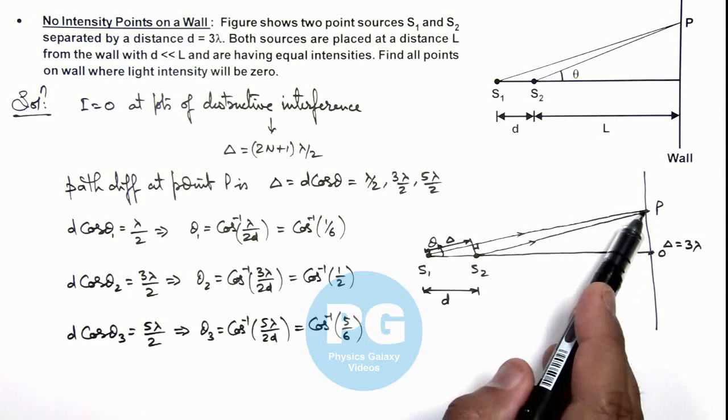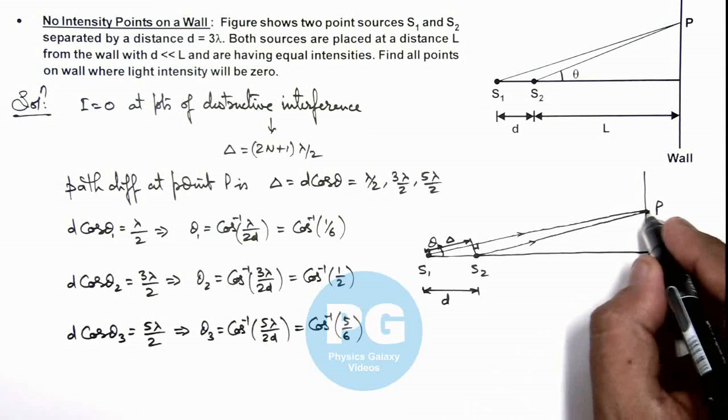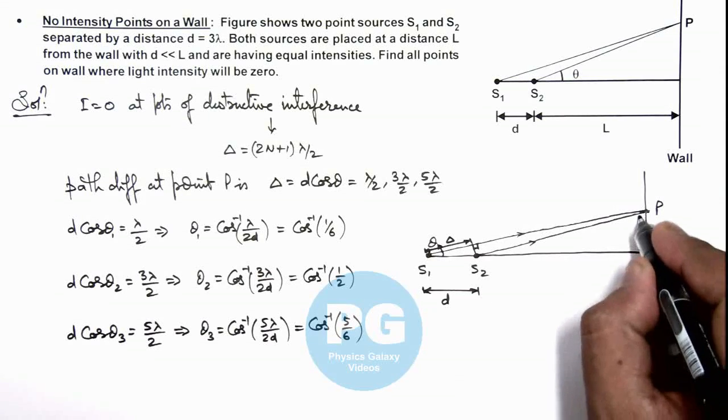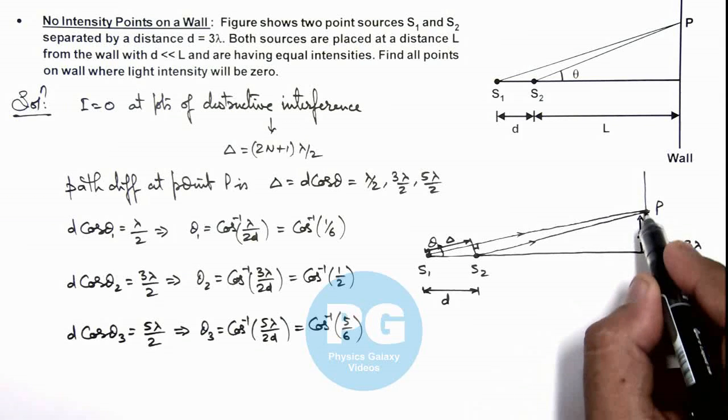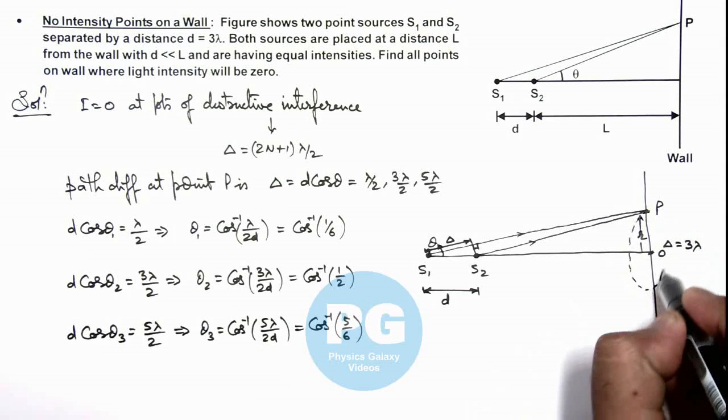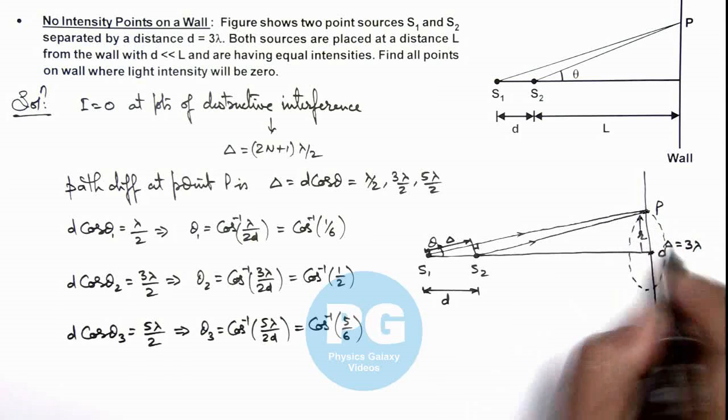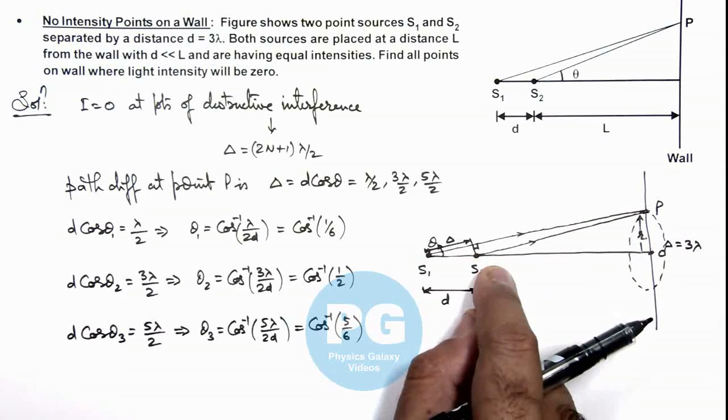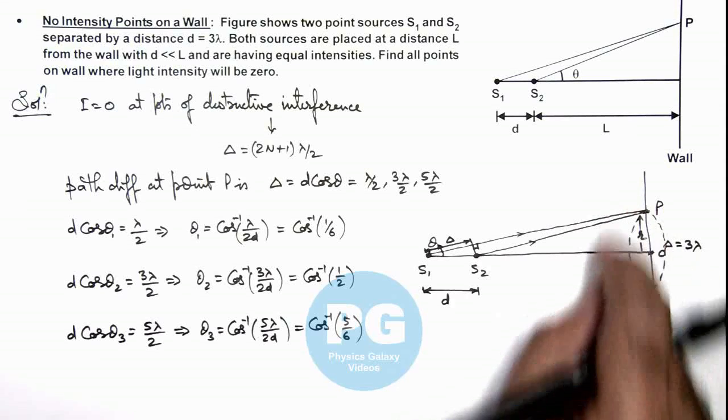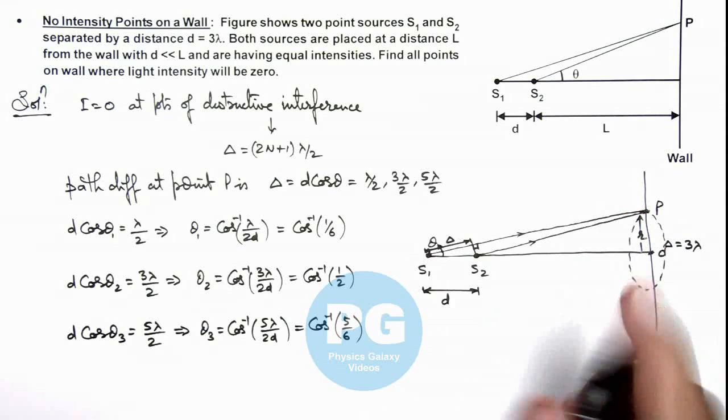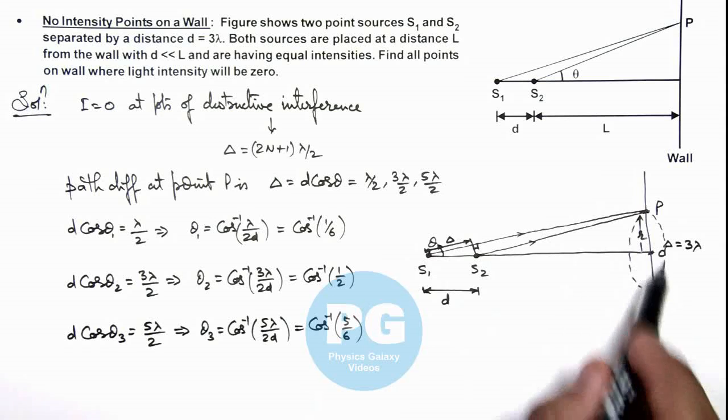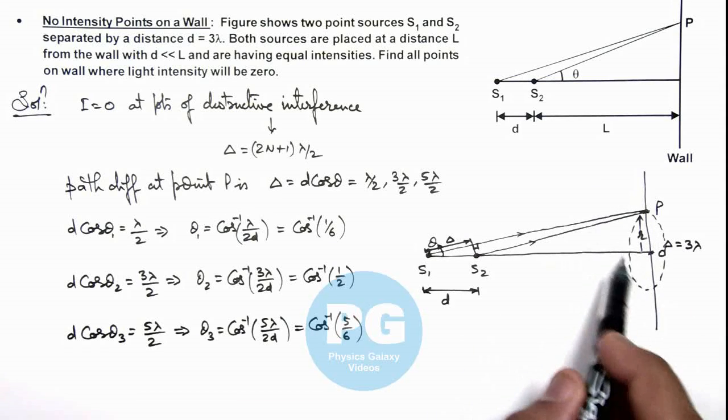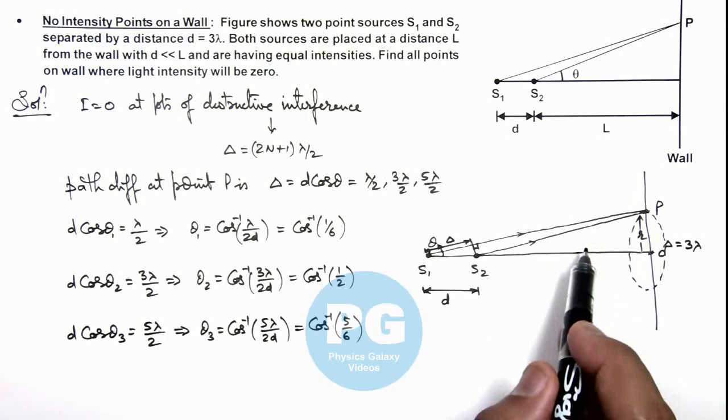We can observe that at a particular point P, if it is located at a distance r from point O, then if we consider a circle of radius r on this screen everywhere, the path difference remains same due to the two sources. So the intensity will also remain same. So there will be 3 concentric rings or ring-shaped fringes obtained where the intensity will be zero.